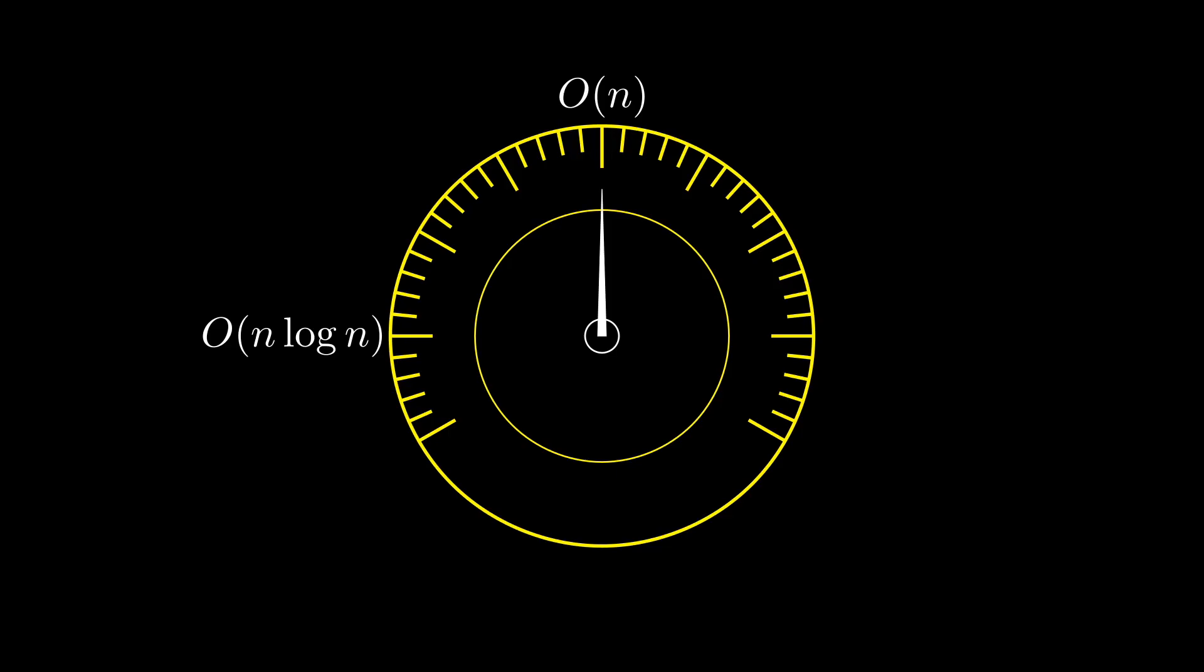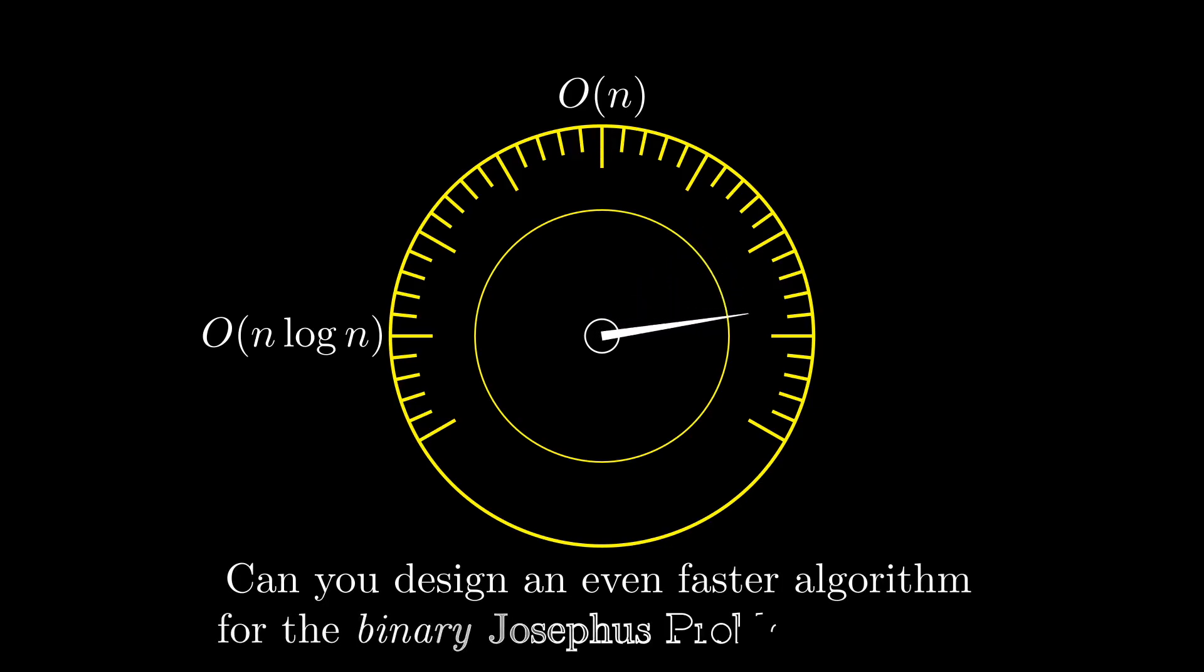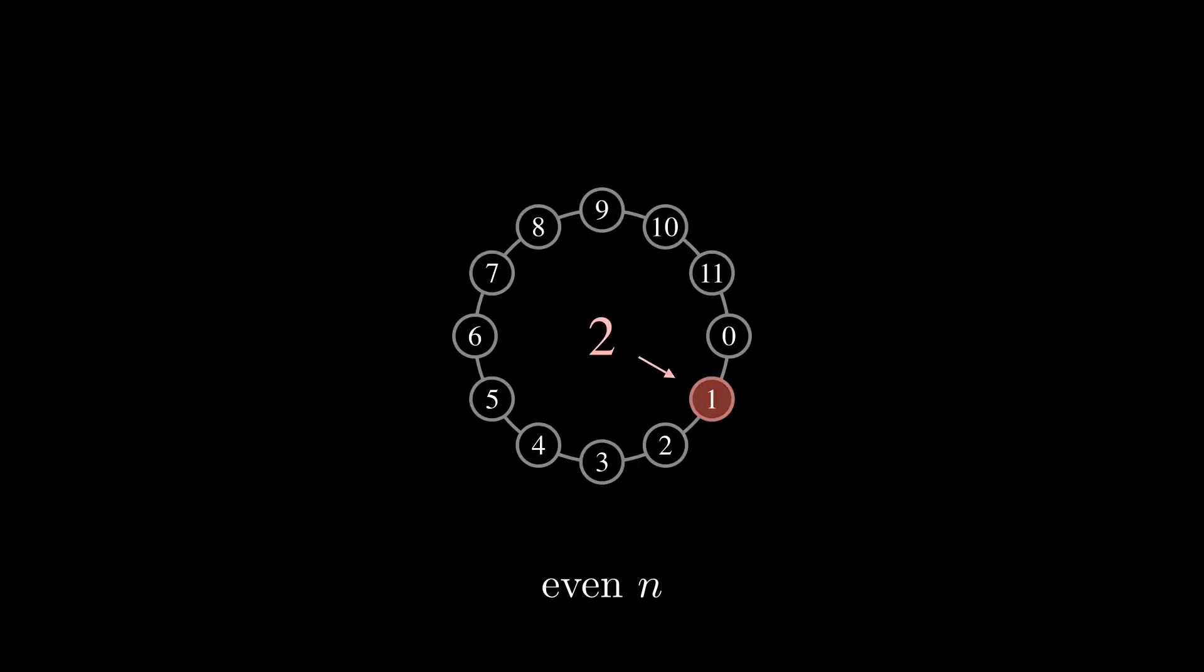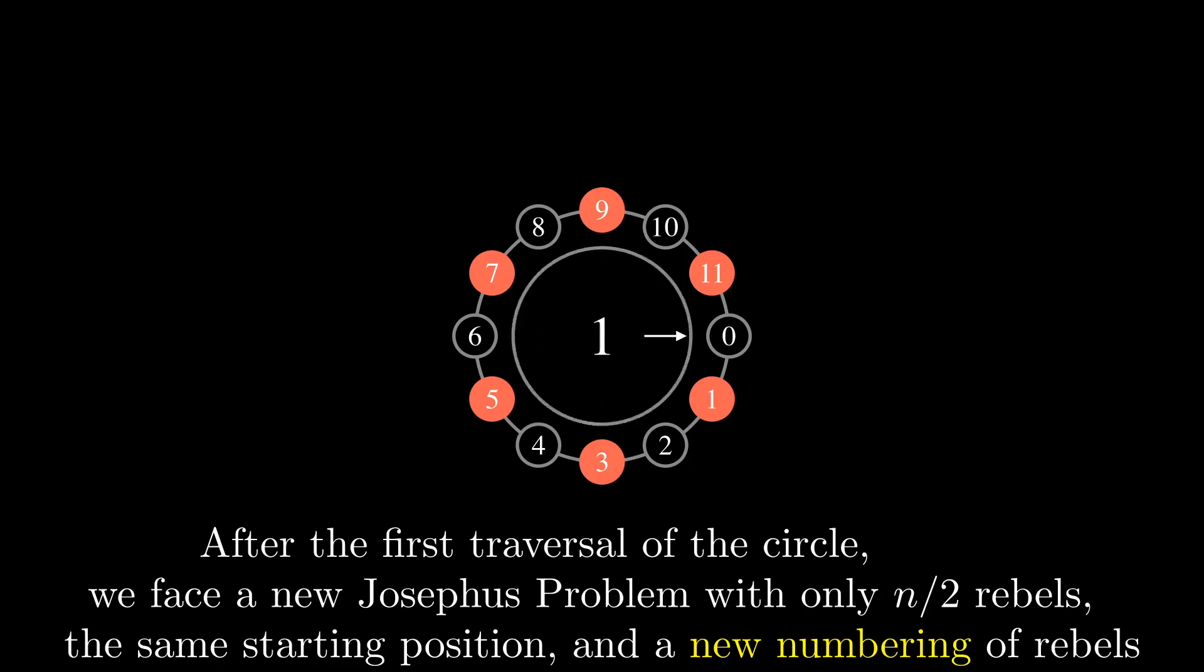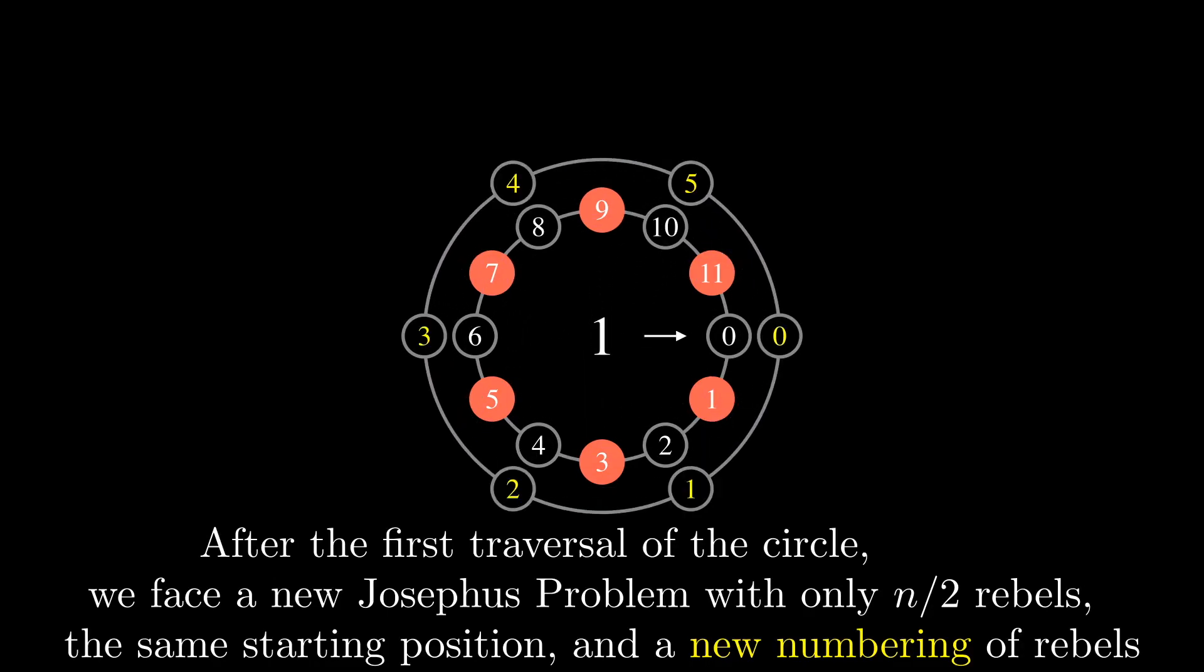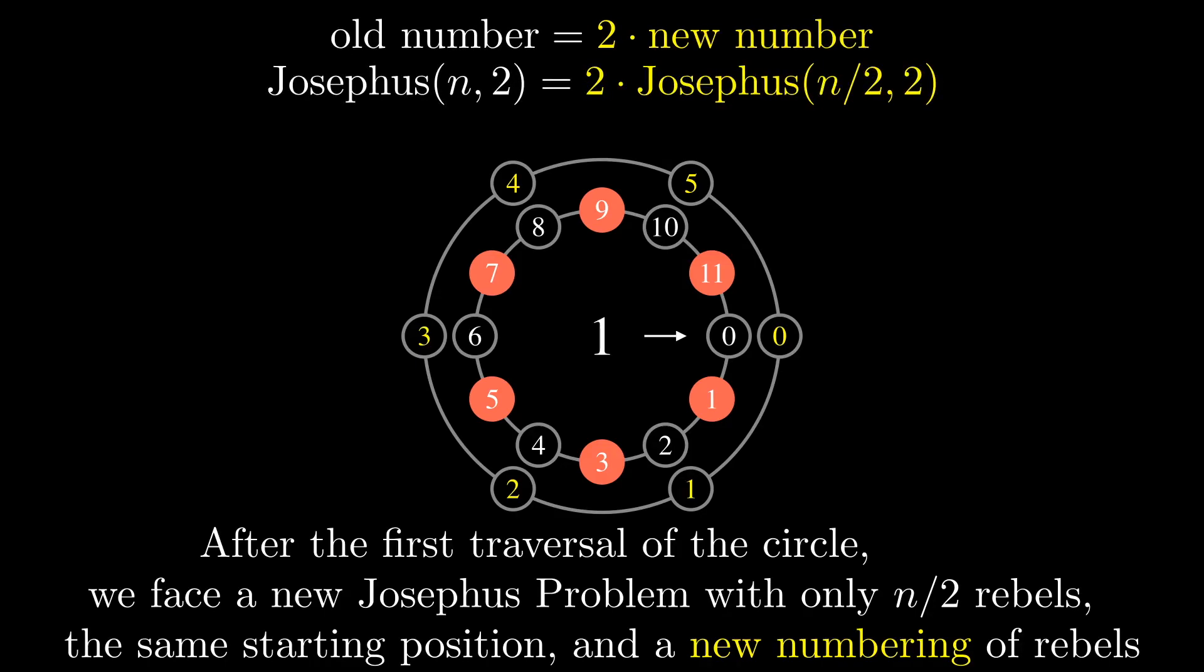After designing a linear algorithm for an arbitrary k, can you come up with an even faster algorithm for the binary Josephus problem in the case k equals 2? Let's start by analyzing the binary Josephus problem for an even number of rebels. After the first traversal of the circle, we face a new Josephus problem with only n over 2 rebels, the same starting position, and a new numbering of rebels. Here is the formula for transforming old numbers into new numbers, implying that Josephus(n, 2) is equal to 2 times Josephus(n/2, 2).